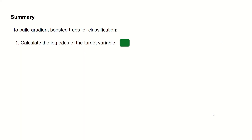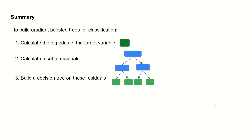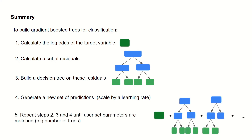In summary, to build gradient-boosted trees for classification: first, we calculate the log odds of the target variable. We then calculate a set of residuals by converting the log odds to a predicted probability and subtracting that from our observed values. We then build a decision tree on these residuals, and generate a new set of predictions, which we scale by a learning rate to reduce overfitting. We then just keep repeating steps 2, 3, and 4 until user-set parameters are matched, such as number of trees, which could be set to 100.